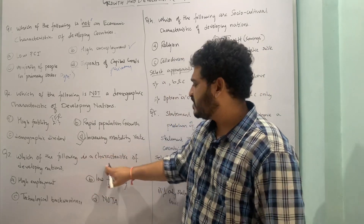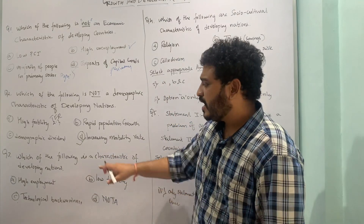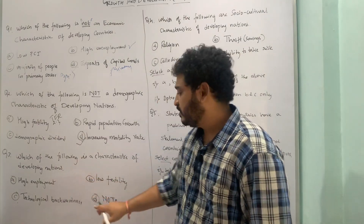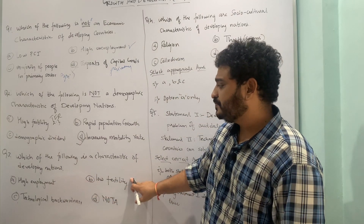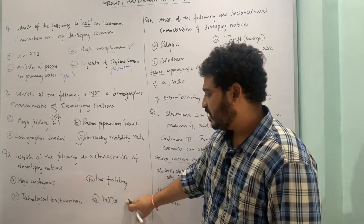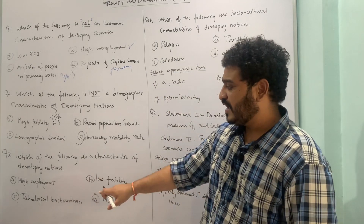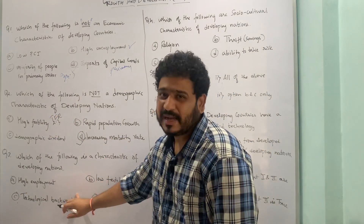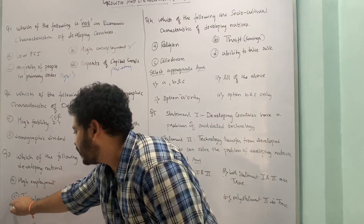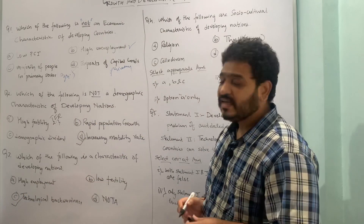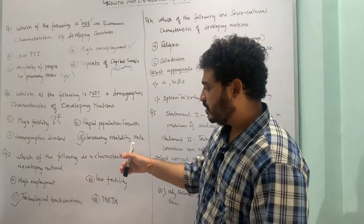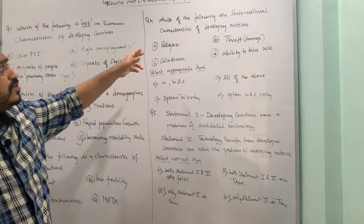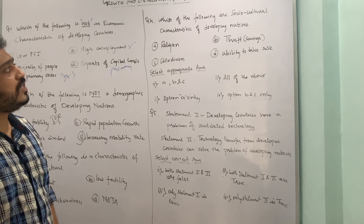Let us move to the third question: which of the following is a characteristic of a developing nation? High employment — no, we have rather high unemployment. Low fertility — no, we have high fertility. Technological backwardness — yes. So option C, technological backwardness, is the correct answer for the third question.